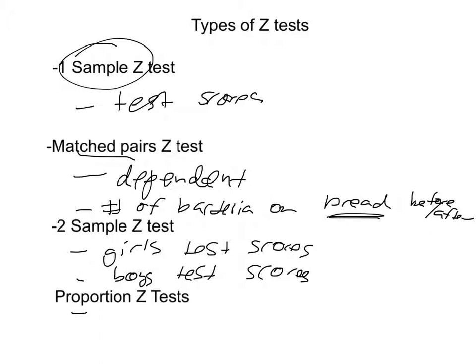And then a proportion z-test would be, let's say, the proportion of people that subscribe to a newspaper would be P equals 0.6, 60% subscribe to a newspaper.